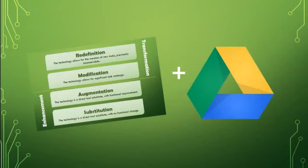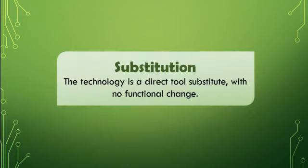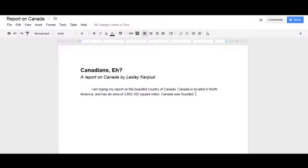Let's relate each level of the SAMR model to the use of Google Docs for illustrative purposes, since it's a tool that we all have at our disposal. The first level is called substitution. At the most basic level, you're using technology to substitute a paper-pencil task — for example, using Google Docs like any other word processor to type a report. The new technology of Google Docs is just replacing the old technology of paper-pencil, but the task itself, writing a paper, has not changed.